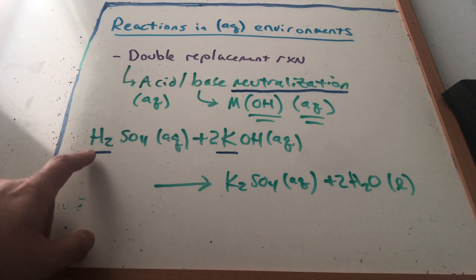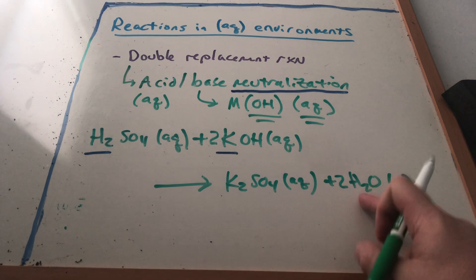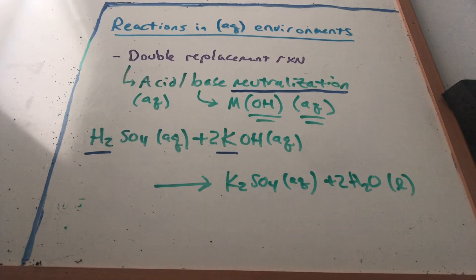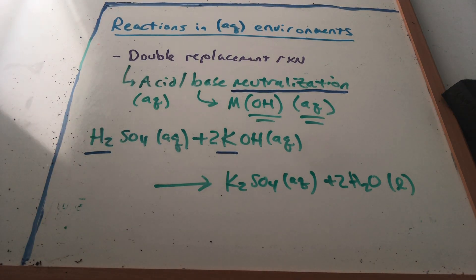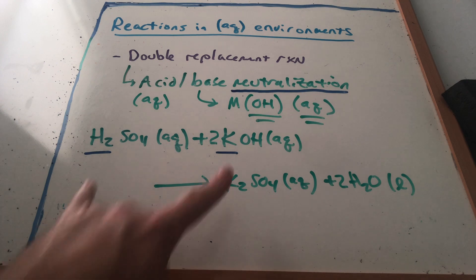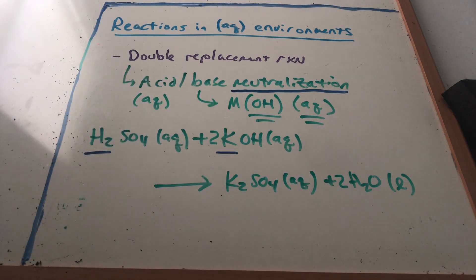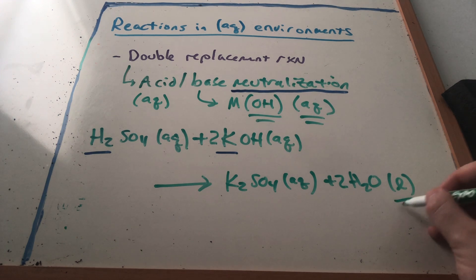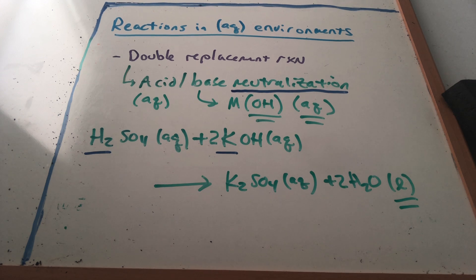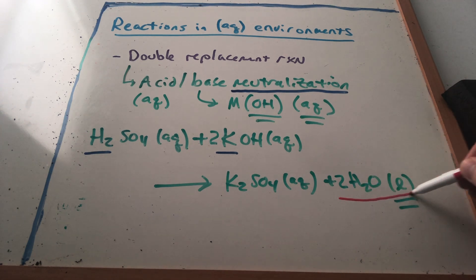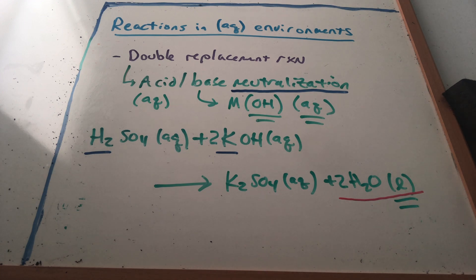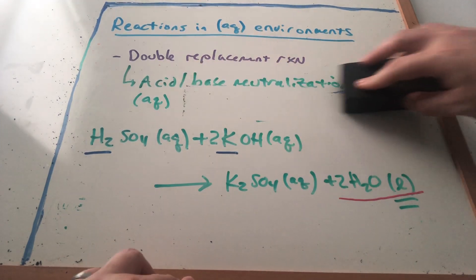Balancing: I need a 2 in front of KOH. On the left I have two H's from H2SO4 plus two H's from 2KOH — four H's total — and on the right I have 2H2O, also four H's. The equation is balanced: H2SO4 (aq) + 2KOH (aq) → K2SO4 (aq) + 2H2O (l). We did not make a precipitate, but a reaction occurred because we made something that's no longer aqueous. We can write a total ionic and net ionic equation.